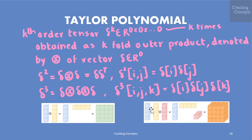The outer products of vectors increase the dimensionality of the array by one per term. In the first case, the outer product of two vectors results in a matrix: δ ∈ ℝ⁴, and δ² = δδᵀ ∈ ℝ^(4×4). In the second case, the outer product of three vectors yields a third order tensor: δ³ ∈ ℝ^(4×4×4), which is an array with three indices.